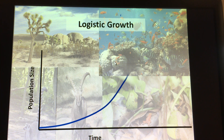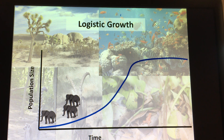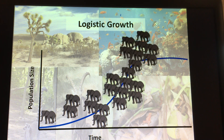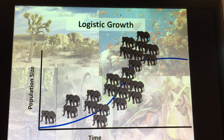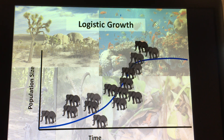If we look at this graph with the elephant population — once protected from hunting, it starts to multiply. But then there are a lot of elephants, and things like competition for food, competition for space, and competition for mates mean you are going to have a decrease in population size. Not all members will survive.